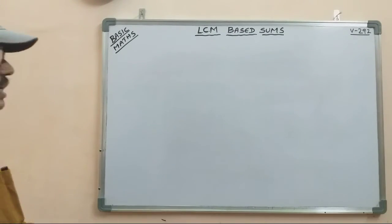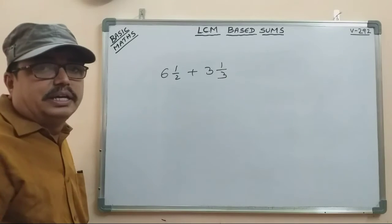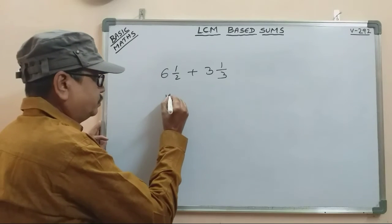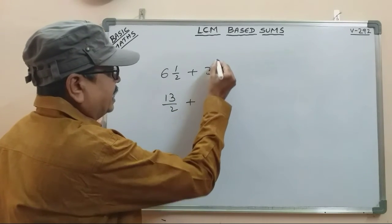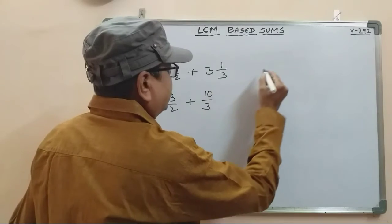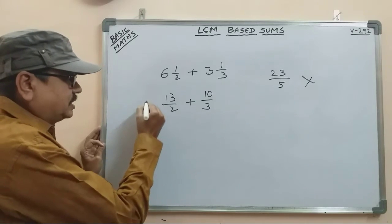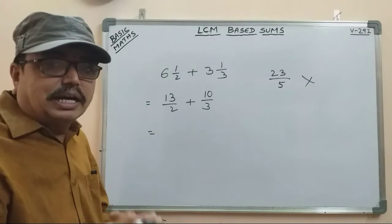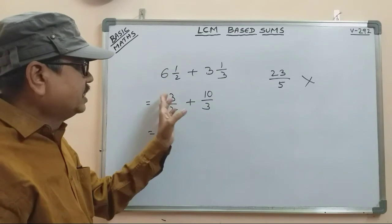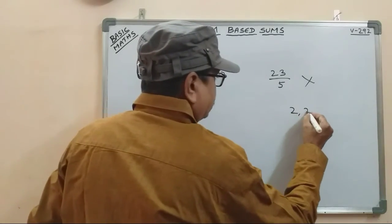Last law: 2x mixer number 6 and 1 by 2, plus 3 and 1 by 3. So mixer fraction of the number 6 and 1 by 2: 12 plus 1 is 13 by 2. 3 and 1 by 3: 3 into 3 is 9 plus 1 is 10 by 3. This is 2 into 8, 13 plus 10 is 23, 2 plus 3 is 5 — this is wrong. But LCM basis is the concept. LCM of 2 and 3 is 6.